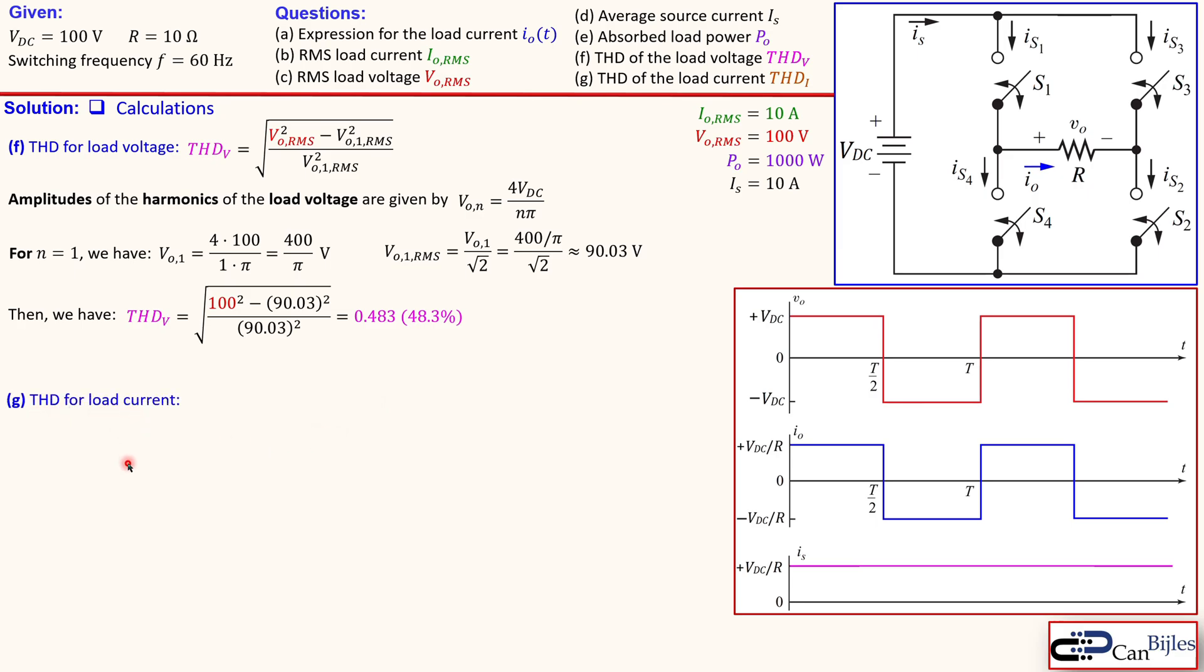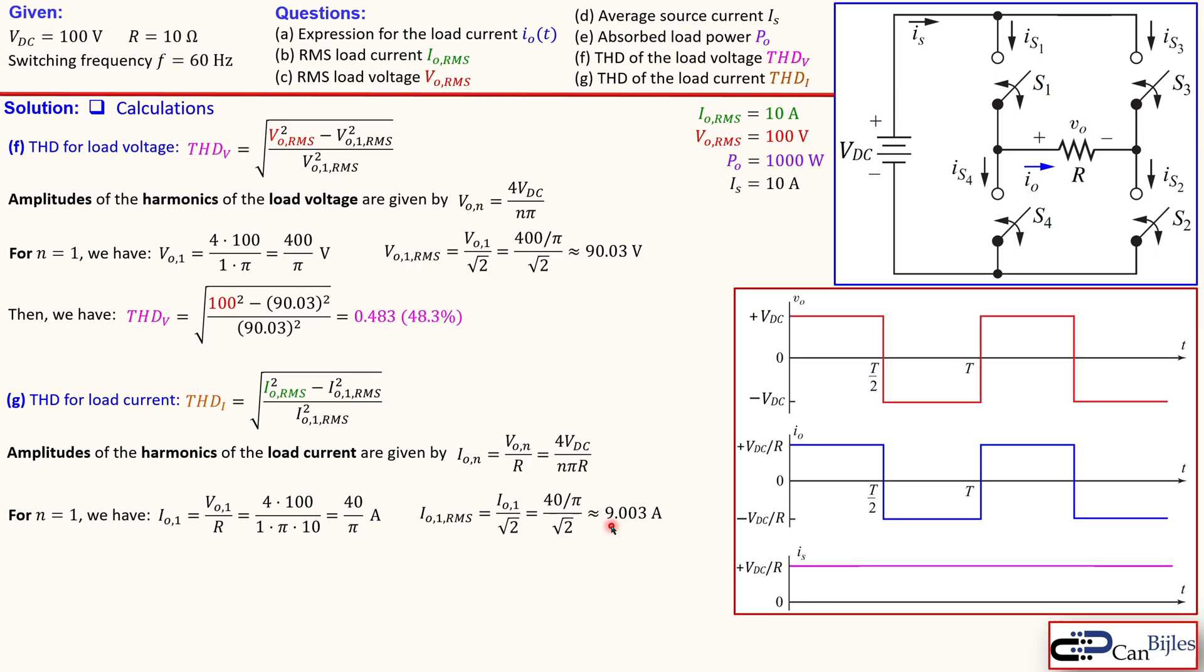Now in similar form for the load current THD again the similar formula again we need the first harmonic so let's go for the amplitude for the harmonics of load current is given by this using Ohm's law because we know the expression for the harmonics for the load voltage so we can use that in the formula of Ohm's law and divide that by resistor in this case and that will give you this expression and then for n equals 1 we have this and it will give you now 400 over 10 pi which is then 40 over pi amps and then if you convert that to RMS just divide by the square root of 2 will give you 9.003 amps and this is of course not a surprise because you can also divide this by 10 you get exactly also this value so this is just to show you that this is also possible in this way.